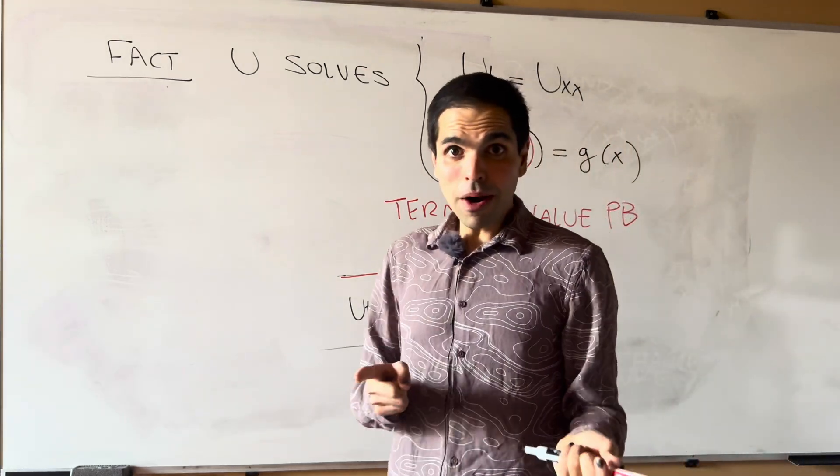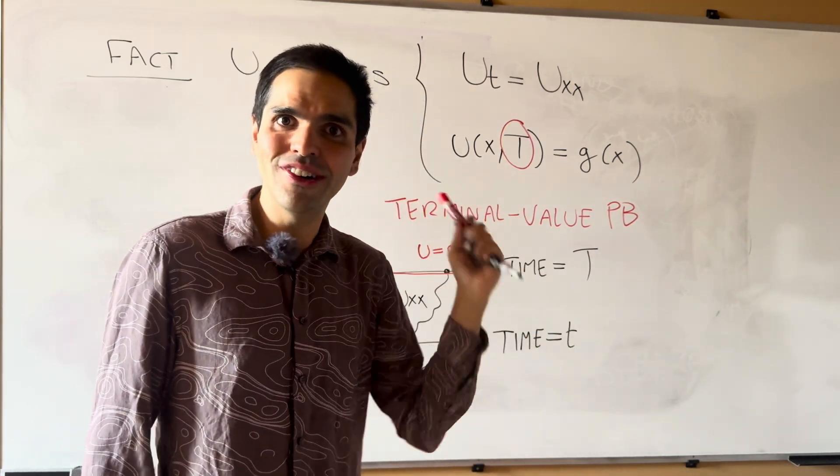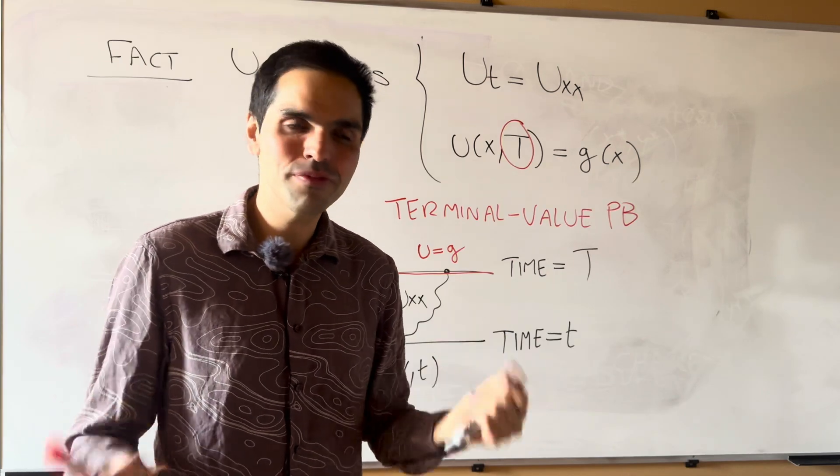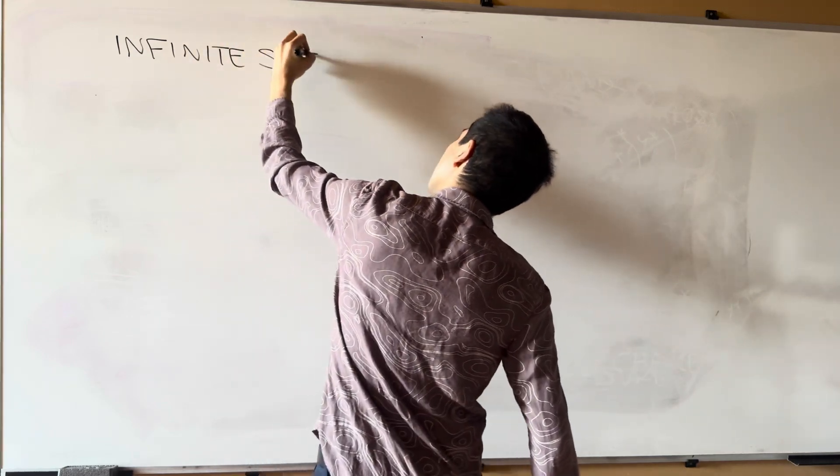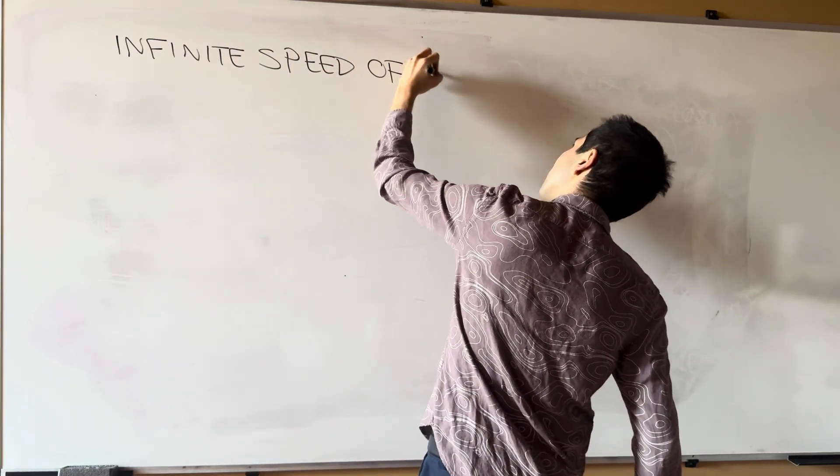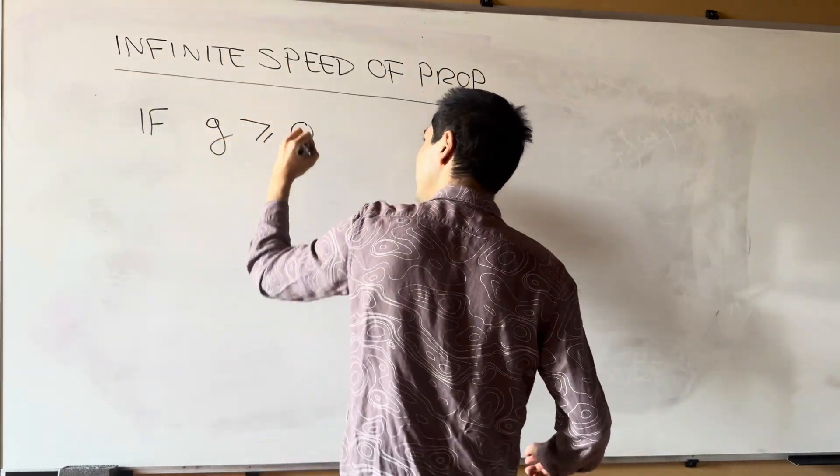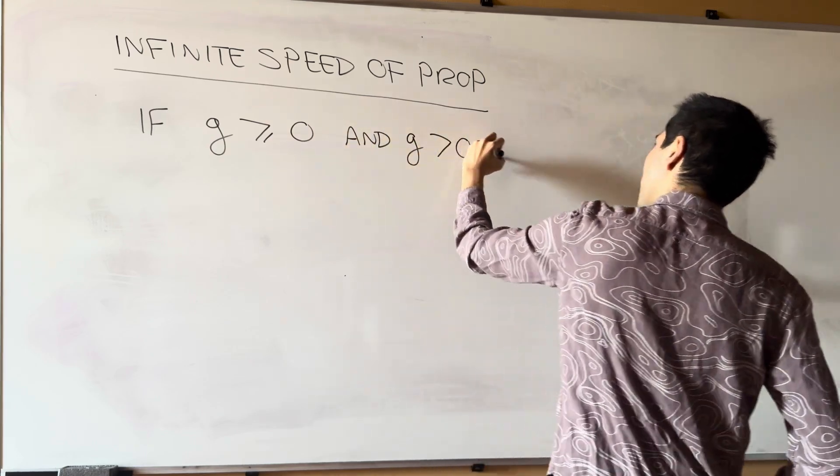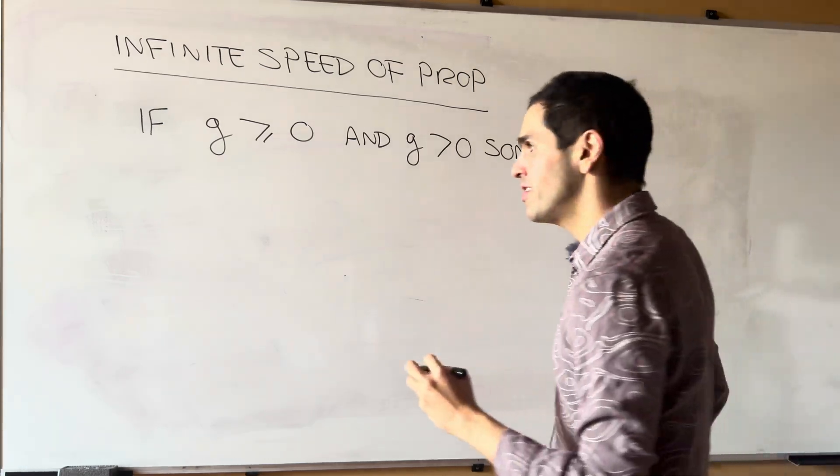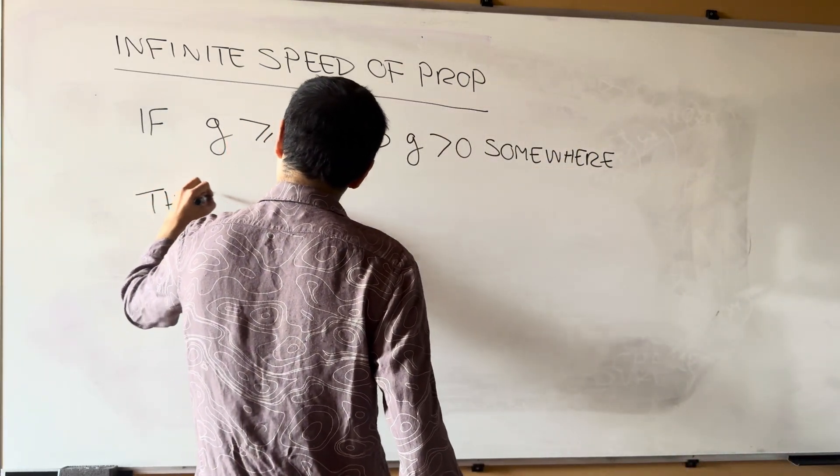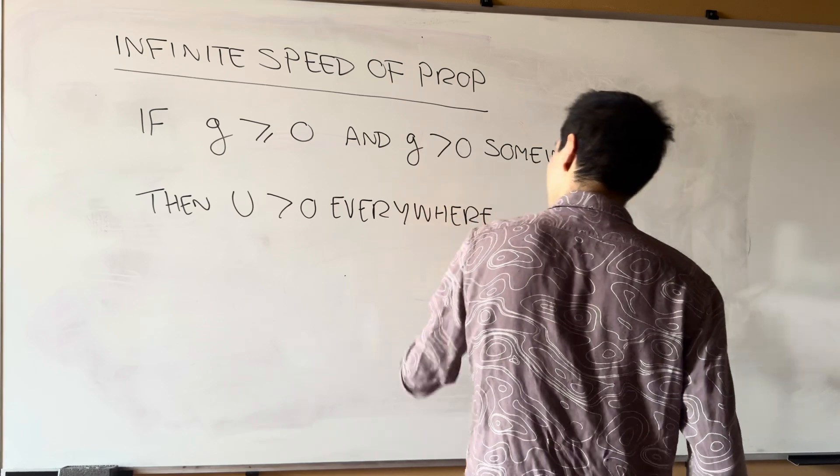Very, very cool. And in particular, remember, we have infinite speed of propagation, which is true here, too, and has another insane consequence. So, here, infinite speed of propagation says the following. If, again, g is greater or equal to zero and g is positive somewhere, then u is positive everywhere.